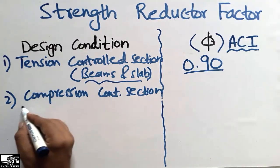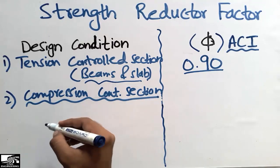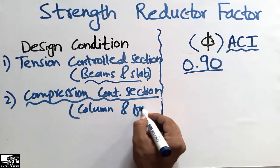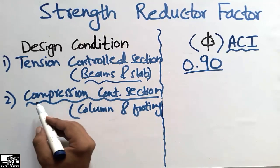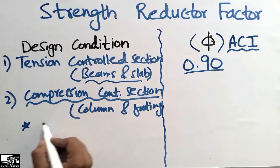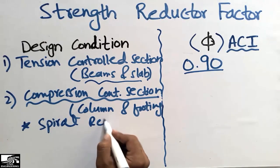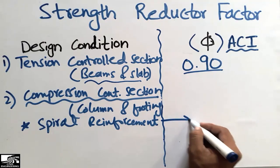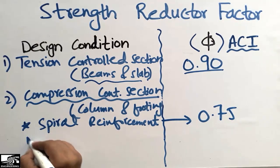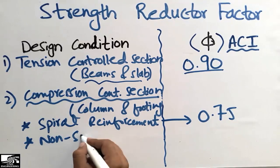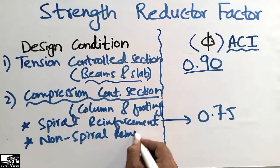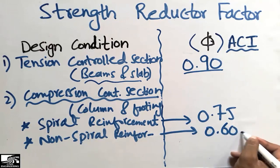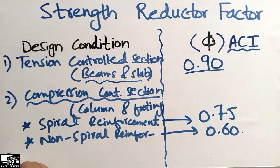The second case is the compression control section. Compression control sections include columns and footings. There are two further classifications within the compression control section. If spiral reinforcement is used, we apply a strength reduction factor of 0.75. When non-spiral reinforcement is used, we apply a strength reduction factor of 0.60.